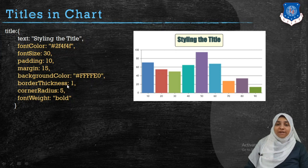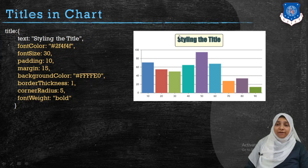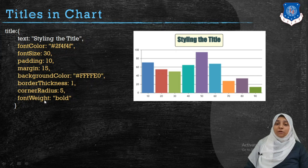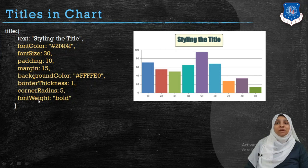The borderThickness property sets the border thickness in pixels (values 1 through 10). The cornerRadius property makes the border a rounded rectangle — for example, cornerRadius: 5. The fontWeight property can be set to bold, bolder, or italic to highlight the title; by default it displays as simple normal text.